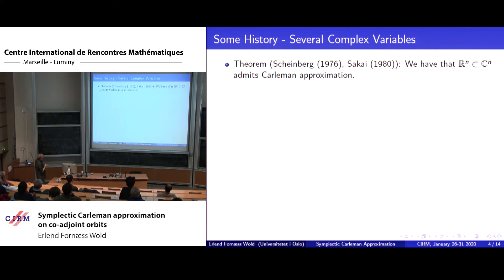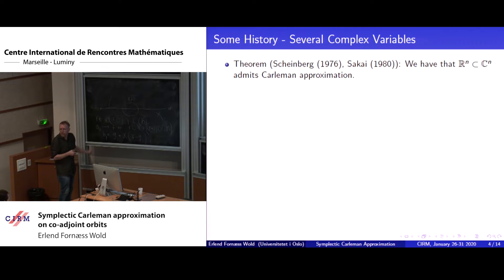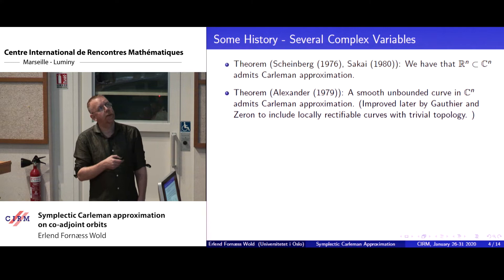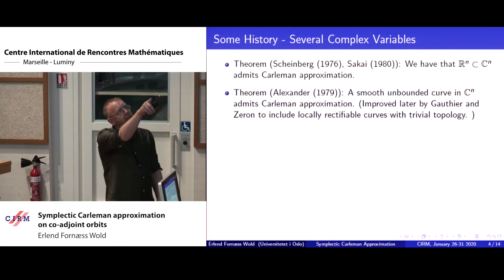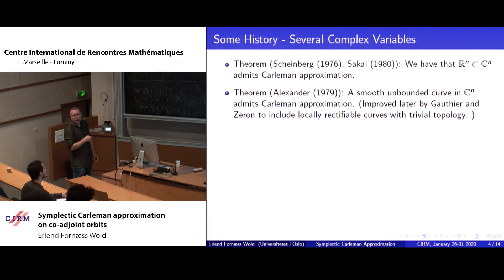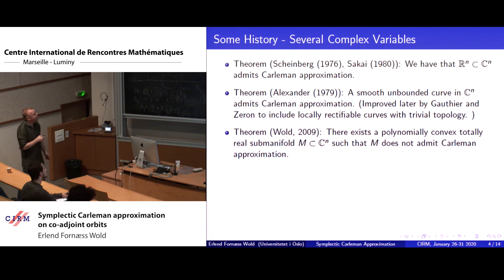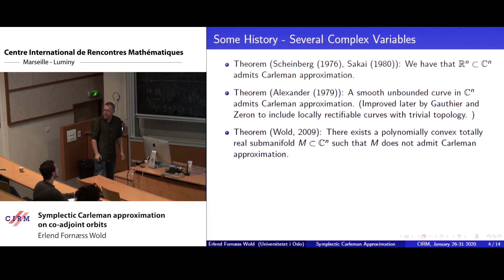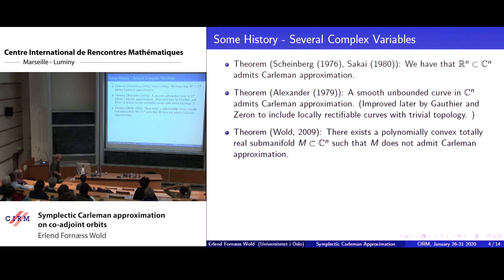A little bit closer to our case: R^n inside C^n satisfies Carleman approximation, and the proof is not much harder. Moving away from flat things, it's known that smooth unbounded curves, and more generally locally rectifiable curves, always admit such approximation. However, moving up to higher-dimensional submanifolds, things change in several complex variables because there are polynomially convex totally real submanifolds which do not admit Carleman approximation.